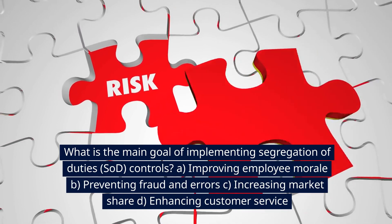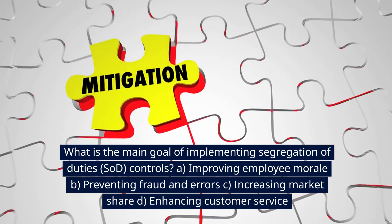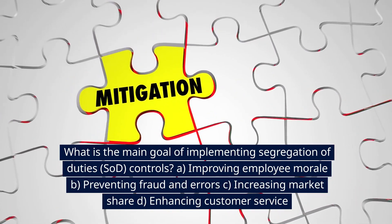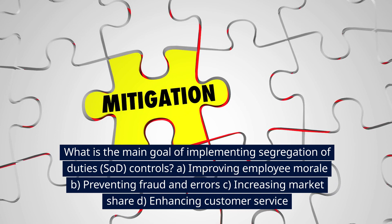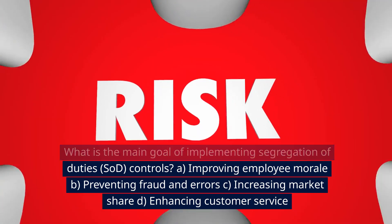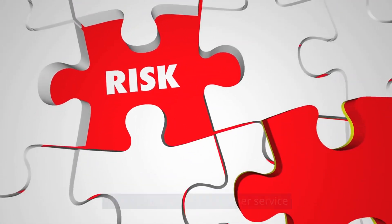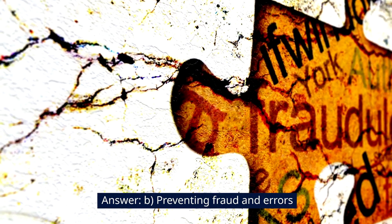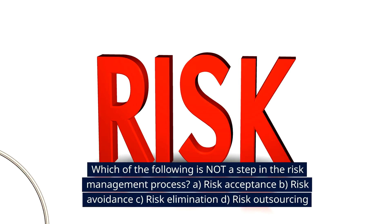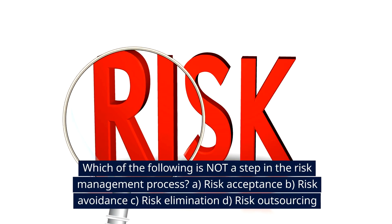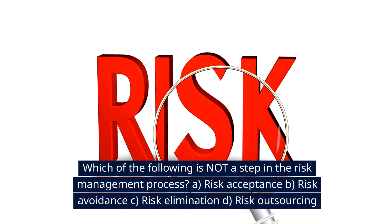What is the main goal of implementing segregation of duties (SOD) controls? A. Improving employee morale. B. Preventing fraud and errors. C. Increasing market share. D. Enhancing customer service. Answer: B. Preventing fraud and errors.